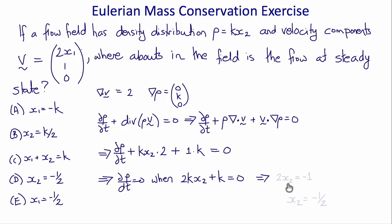Which gives us that 2x2 equals minus 1, or x2 equals minus 1 half, which was choice D.